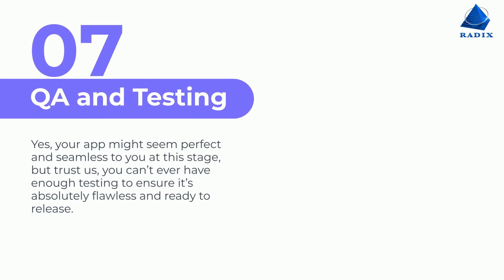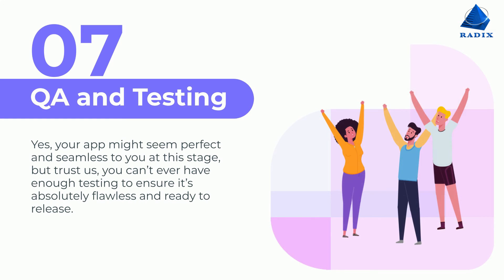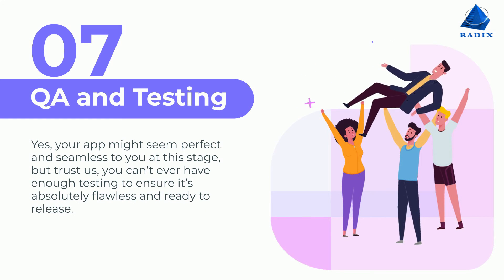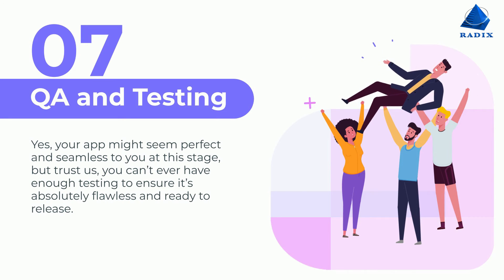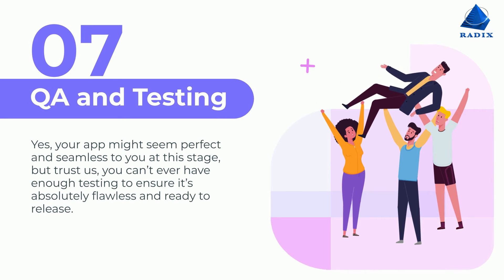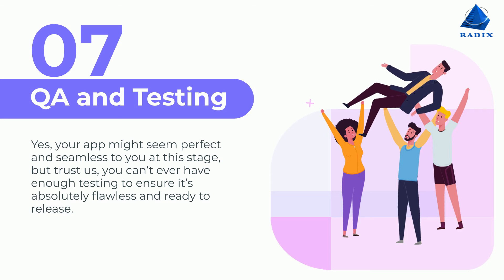Step 7: QA and Testing. Yes, your app might seem perfect and seamless to you at this stage. However, you can never have enough testing to ensure it's absolutely flawless and ready to release.